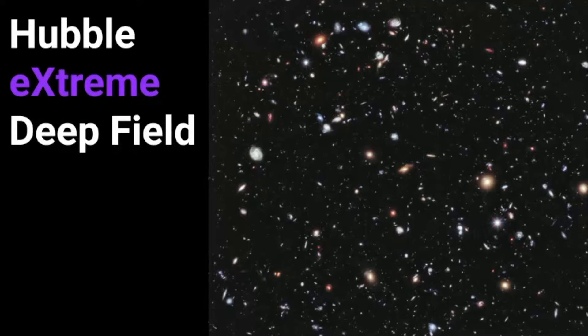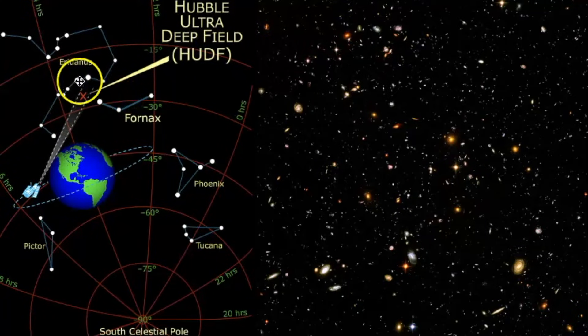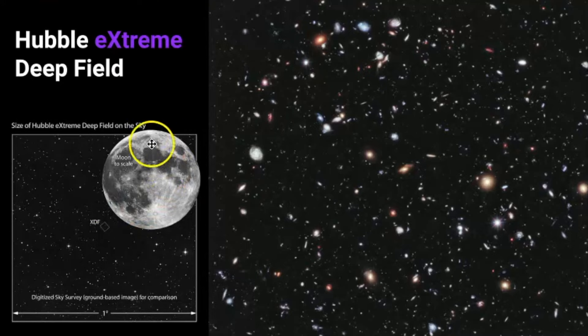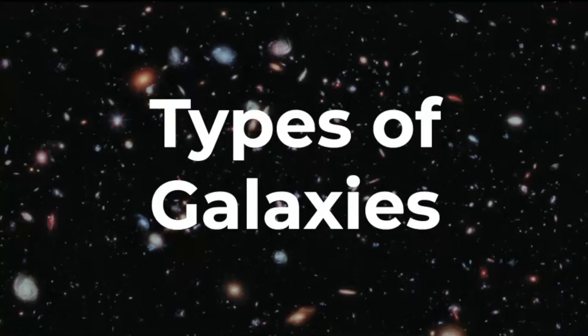It's the deepest look we have into the universe thus far at the time of this video. This is the region that the Hubble was photographing, and you can see when comparing it to the size of the moon it is a very tiny portion of the sky. When you're looking at this photo there are over 5,500 galaxies, some of which scientists have estimated to be over 13 billion years old. In this video we're going to look at the types of galaxies that can be observed, how they're classified, and examples of each type.